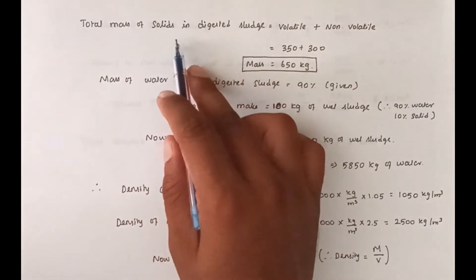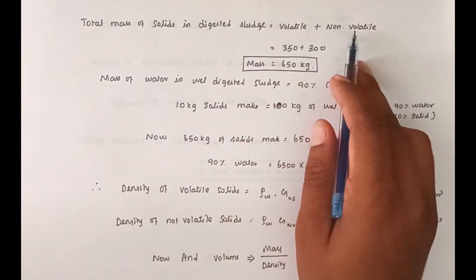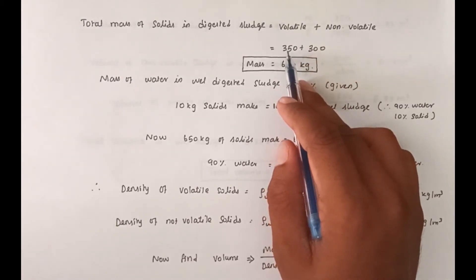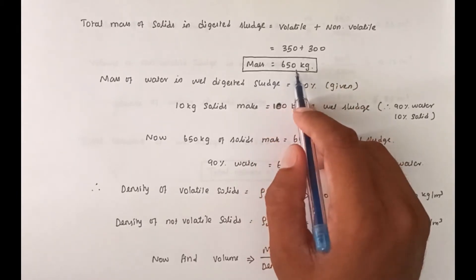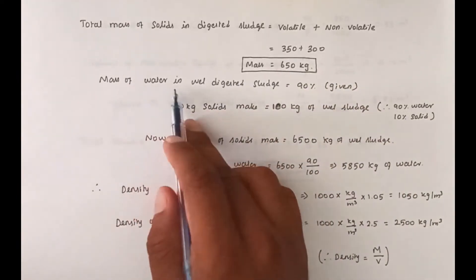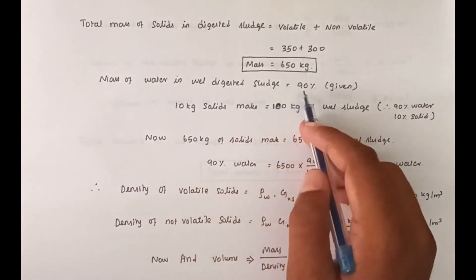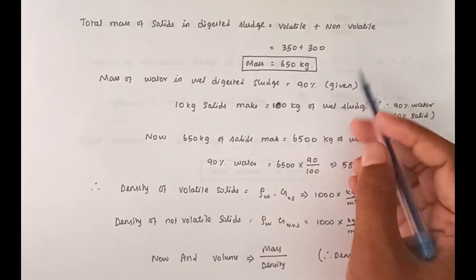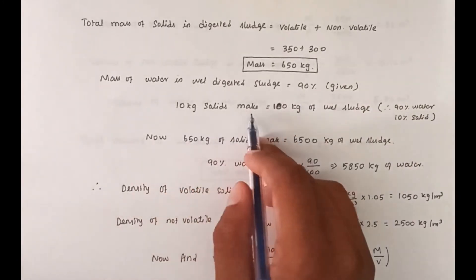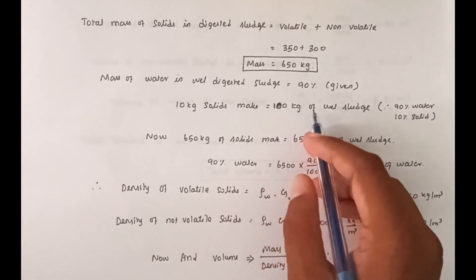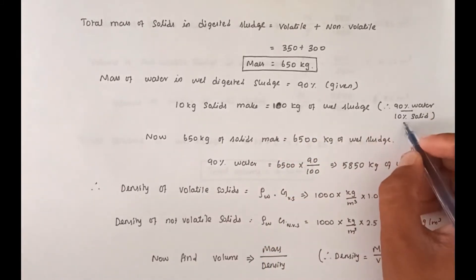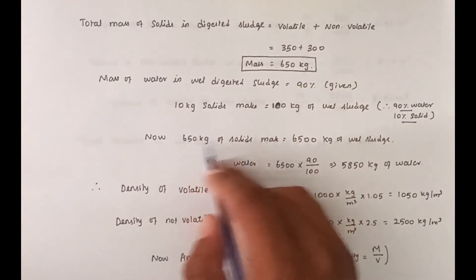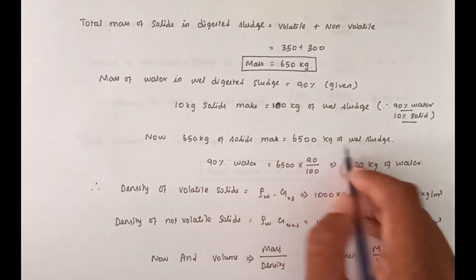After digestion, the moisture content is 90%, meaning 10% solids. So if you have 10 kg of solids, you get 100 kg of wet sludge. Therefore, with 650 kg of solids, we produce 6500 kg of wet sludge. The mass of water = 6500 − 650 = 5850 kg.